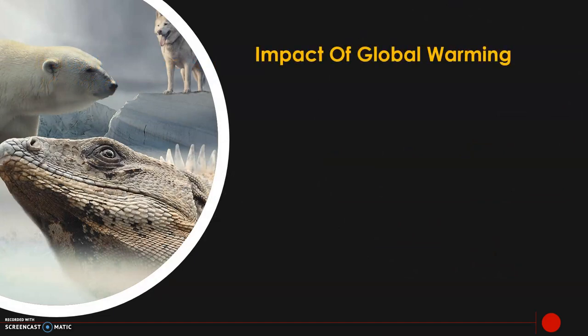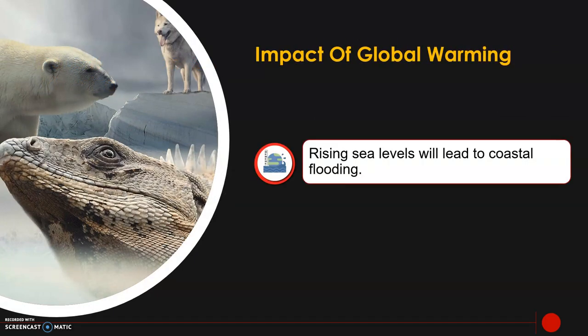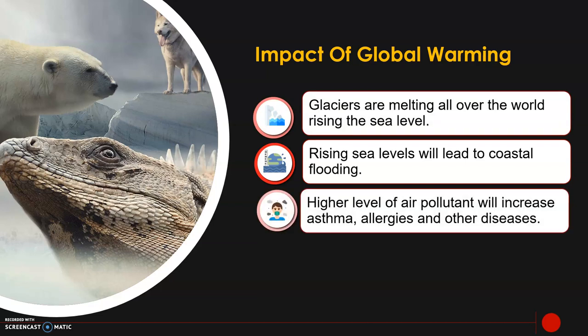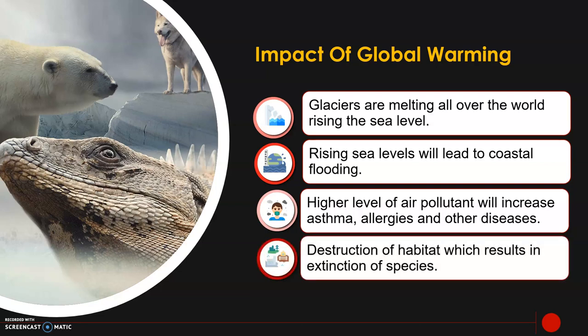What are the impacts of global warming? Rising sea levels will lead to coastal flooding. Glaciers are melting all over the world, raising the sea level. Higher levels of air pollutants will increase asthma, allergies, and other diseases. Destruction of habitat results in the extinction of species.